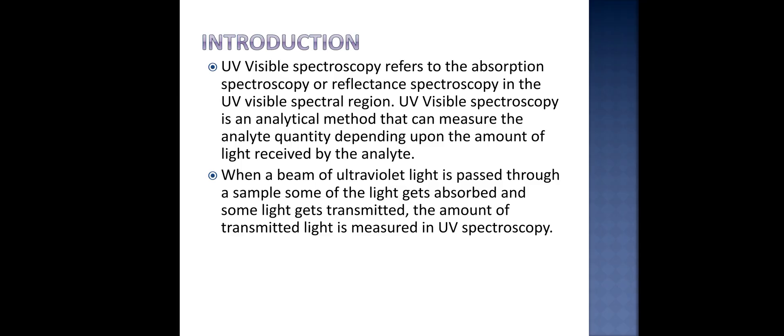UV visible spectroscopy refers to the absorption spectroscopy or reflectance spectroscopy in the ultraviolet visible spectral region. UV visible spectroscopy is an analytical method that can measure the analyte quantity depending upon the amount of light received by the analyte. When a beam of ultraviolet light is passed through a sample, some of the light gets absorbed and some light gets transmitted. The amount of transmitted light is measured in UV spectroscopy.